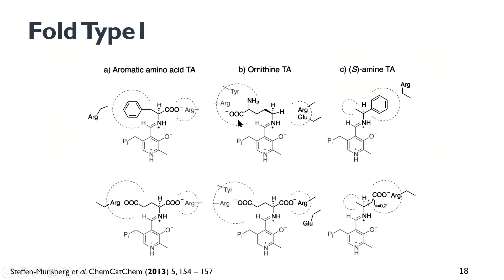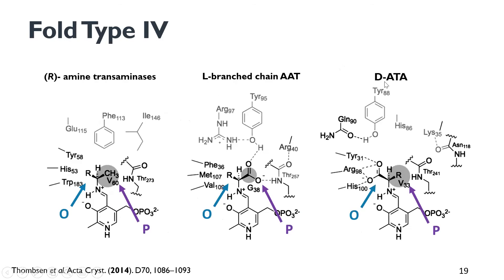Fold type 1 is the most abundant fold type; it includes several different aromatic amino acid transaminases but also our S-amine transaminase. Moreover, fold type 4 includes the L-branched chain amino acid transferase, as well as our R-specific amine transaminase, which also has a P-pocket for binding a methyl group and an O-pocket that can bind different substitutions.